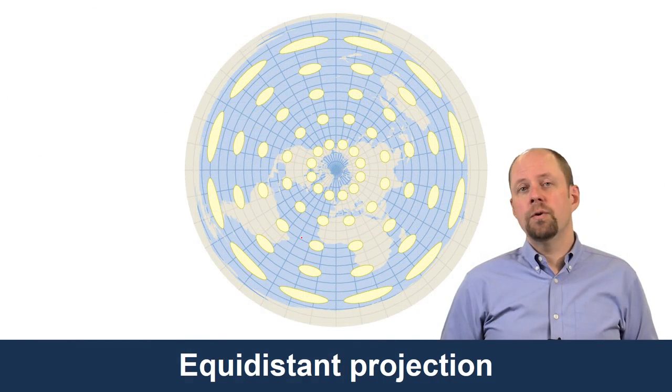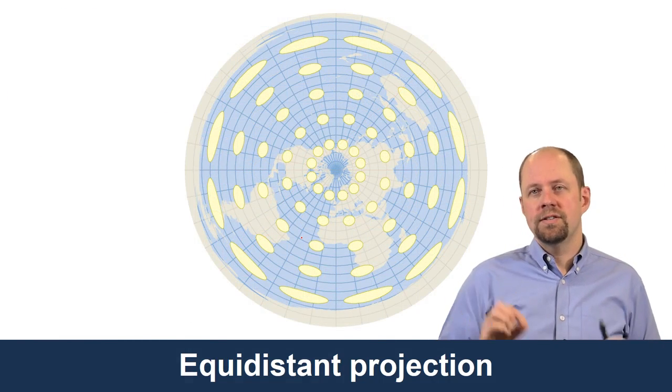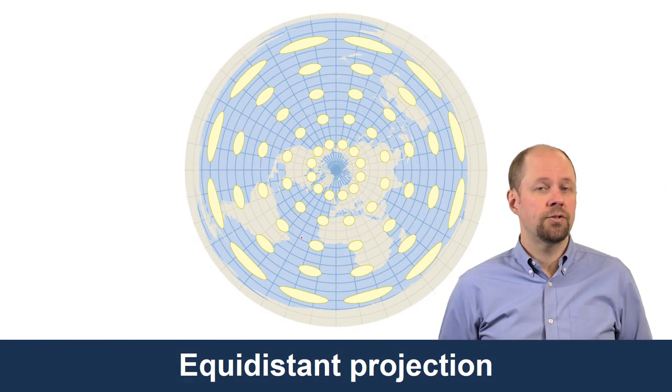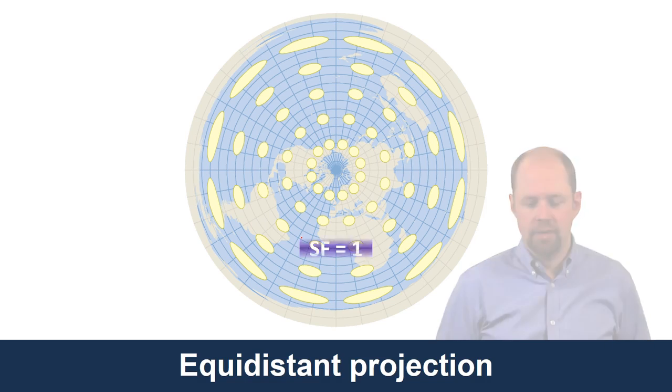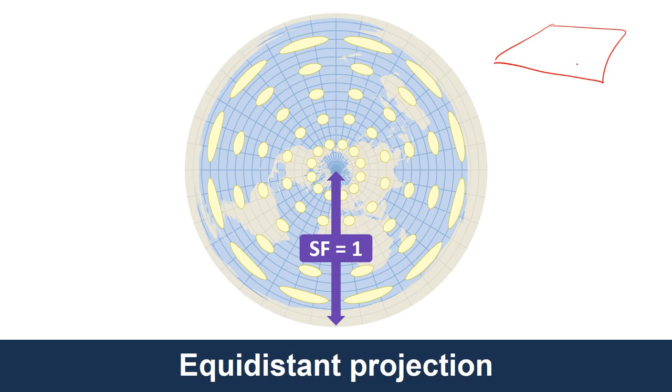This is another equidistant projection, so in other words, distances can be measured accurately, but only in certain circumstances or in certain conditions. Here, this is a planar azimuthal projection, and it's planar because if you think of the sheet of paper as a plane that's touching the globe at the North Pole, that's one reason why it gets that name, it's planar.